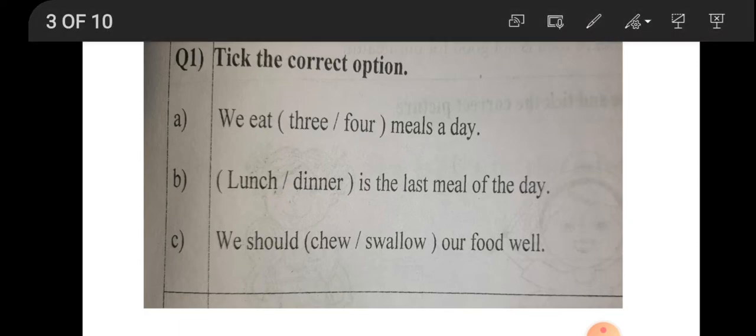Question number 1 children, what does it say? Tick the correct option. Number 1, we eat 3 or 4 meals a day. Correct option means in the bracket 2 answers are given. Out of 2, the correct one we have to take. We eat 3 or 4 meals a day. How many meals per day we eat? Breakfast, lunch and dinner. So total how many? 3. So we are going to tick 3.